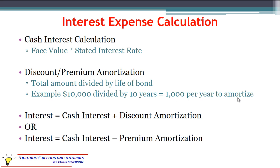In our earlier example it wasn't quite so round. The interest expense is going to be the cash interest plus the discount amortization — it's going to be higher than the cash interest. If it's a premium, it would be the cash interest minus the premium amortization. Discounts and premiums work in opposites — they work against one another.